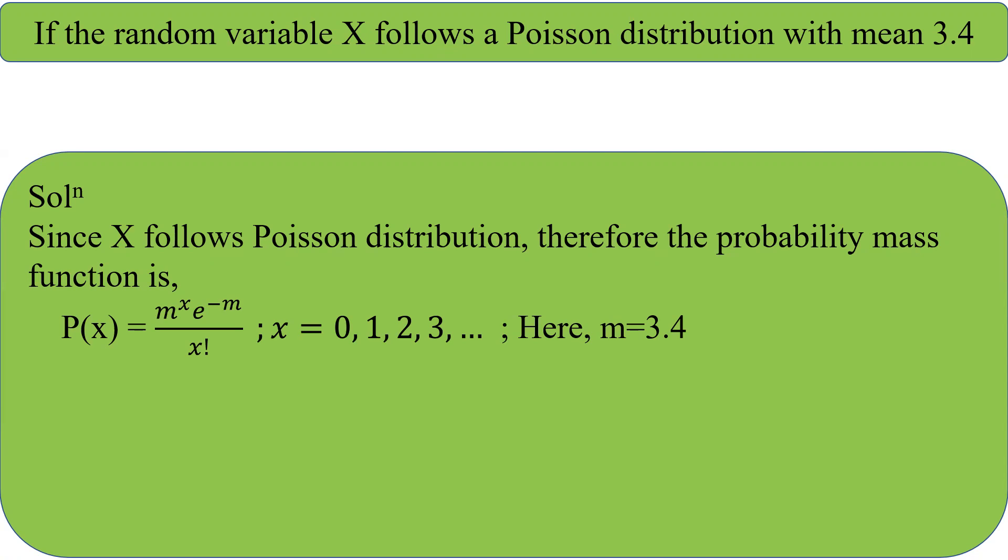Here m is 3.4, which is the parameter of Poisson distribution.